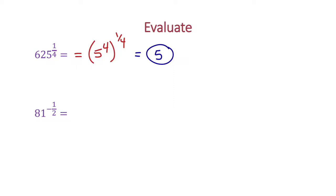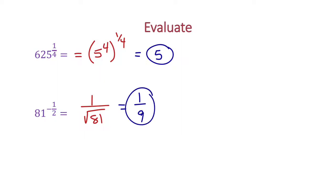Similarly, when we have 81 to the negative 1 half power, remember a negative exponent flips it upside down. So we have 1 over the square root of 81. Since the square root of 81 is 9, our answer is 1 over 9.